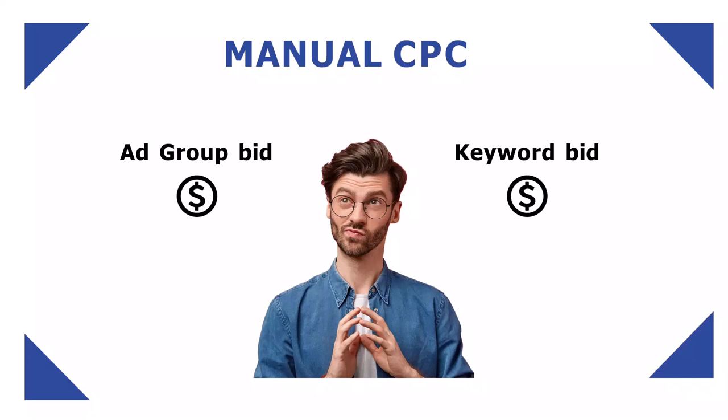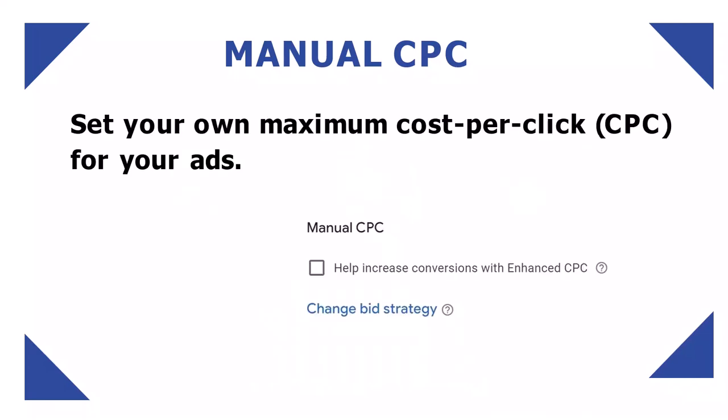First things first, let's understand manual CPC bidding strategy. Manual CPC is a bidding strategy in Google Ads where you manually set the maximum amount that you are willing to pay for each click on your ads. You can either set a maximum CPC bid at the keyword level or at the ad group level.